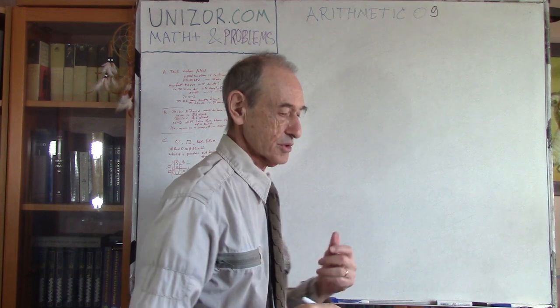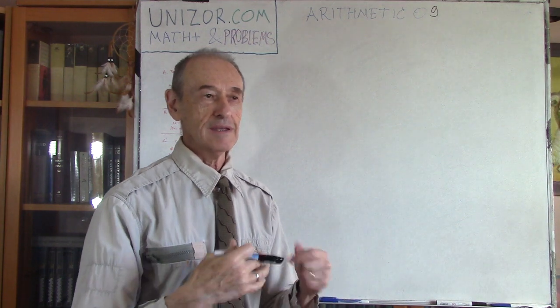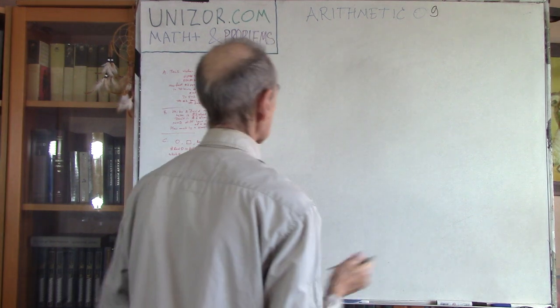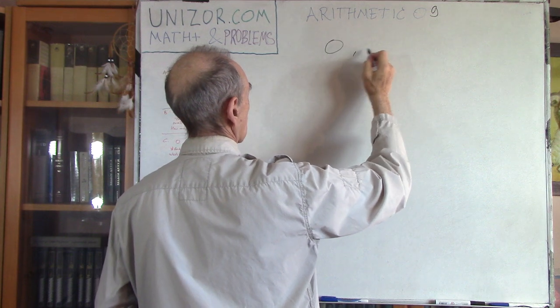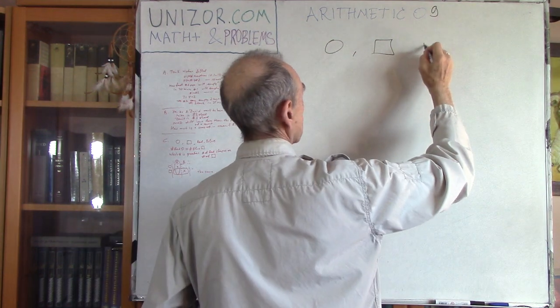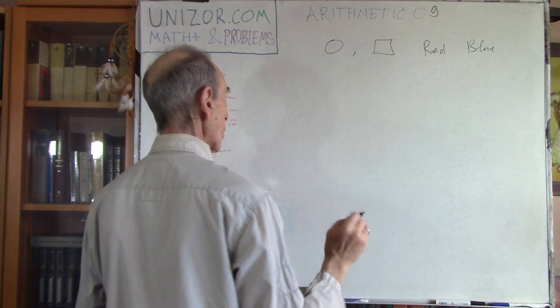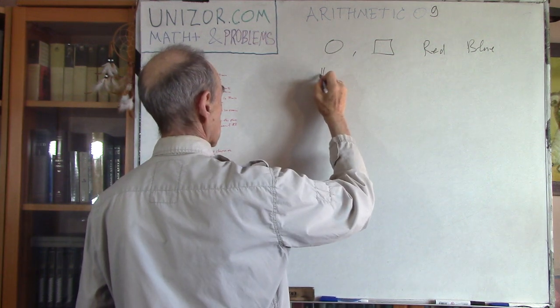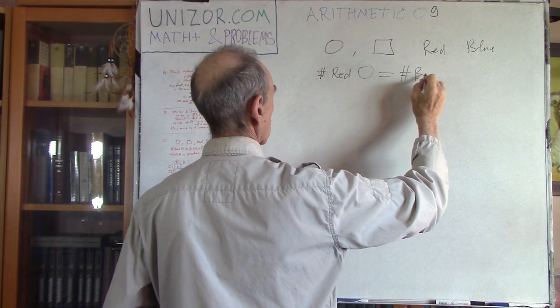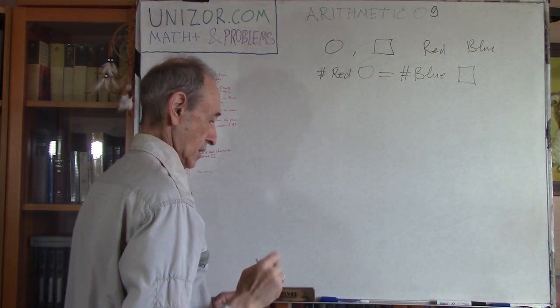And the third is also, it seems a little bit strange, the problem. However, if you will present it in the good way, you will immediately come up with the answer. Here it is. You have circles and squares, a certain number. Some of them are painted red. Some of them are painted blue. What's known is that the number of red circles is equal to number of blue squares.